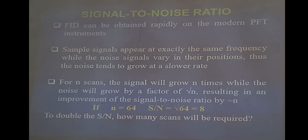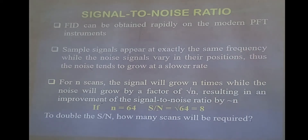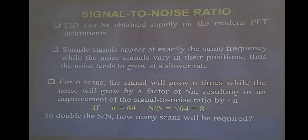It is a very rapid process and it gives you the luxury of scanning your molecule again and again within a short span of time. So when you scan the molecule for the second time, the third time, the fourth time, the signals from your molecule appear at the same position every time — at the same frequency, which means at the same position in the NMR spectrum. But the noise signals vary in their position; the noise is random.